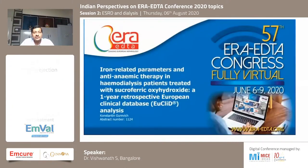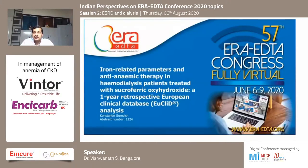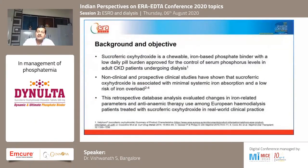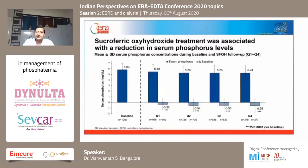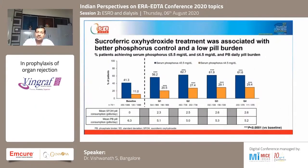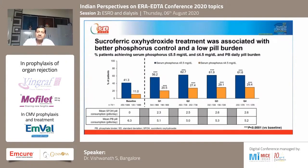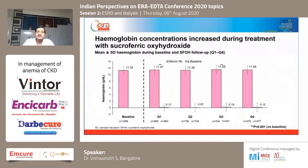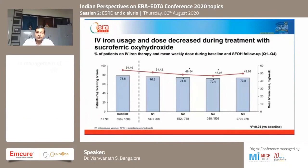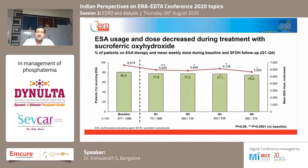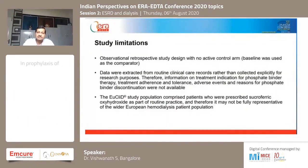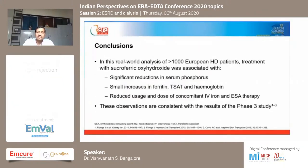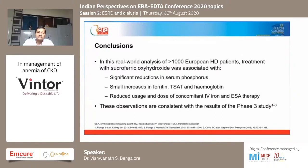Another paper spoke about iron-based sucroferric oxyhydroxide used as a phosphate binder — the EUCLID analysis. Sucroferric oxyhydroxide, a chewable tablet, had a good phosphate-binding capacity and reduced phosphorus levels while also reducing pill burden. It serves dual functions of providing iron supplementation and reducing phosphorus. Ferritin levels were well maintained, hemoglobin concentrations were marginally better, and IV iron usage came down, reducing iron toxicity. A limitation was that there was no active control arm and it was a retrospective chart review; however, a study of over 1000 European dialysis patients confirmed increased ferritin levels.